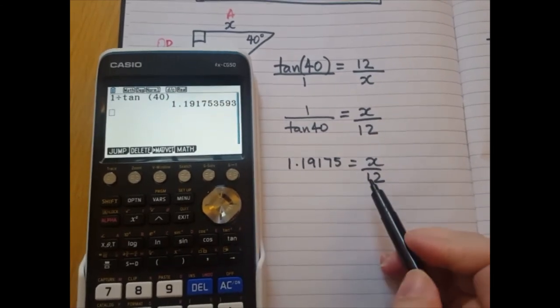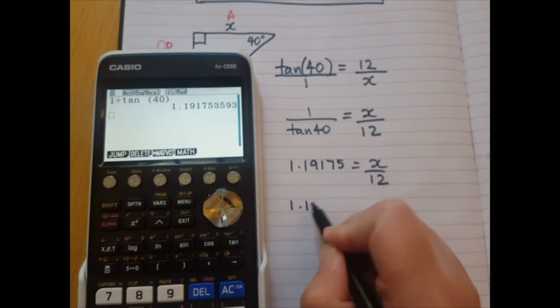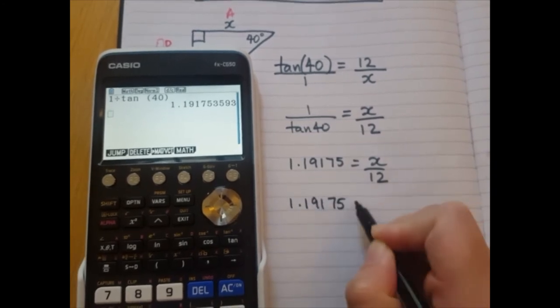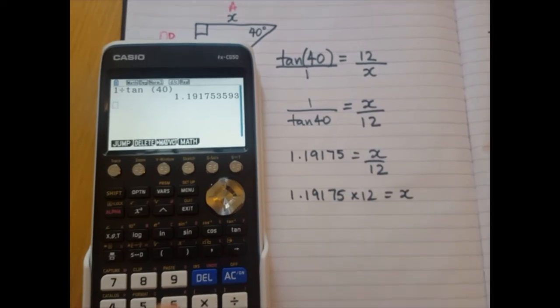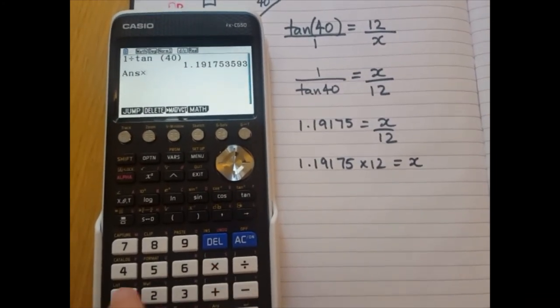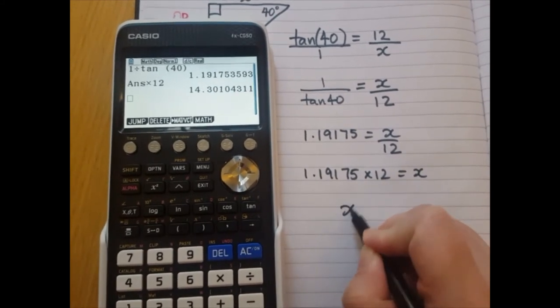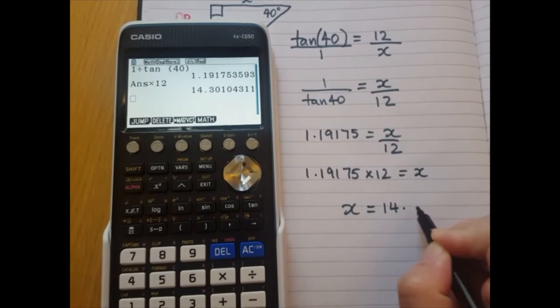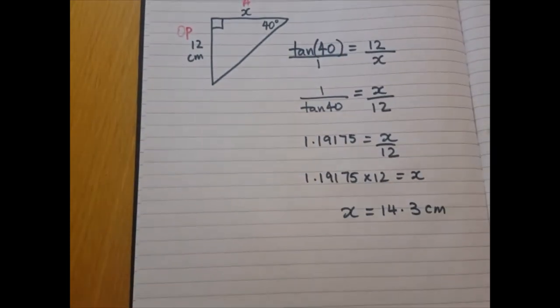Then to find x, I need to take this number and times it by 12. So let's do that. Use the answer key. Answer times 12. So x is 14.3 centimeters.